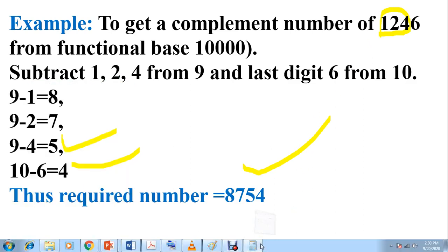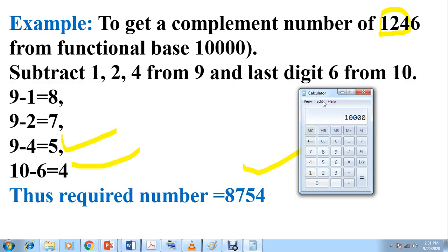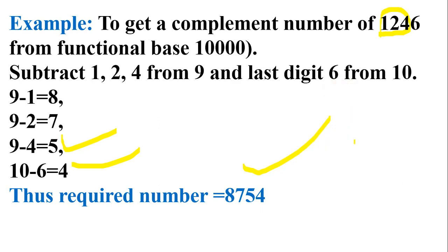Once again you can calculate and check: 1,246 plus 8,754 should come to 10,000. Yes, it is coming to 10,000. Very simple guys — this is how you can use this method to calculate the complement number, or Puraak Sankhya.